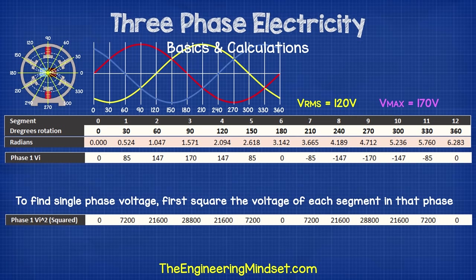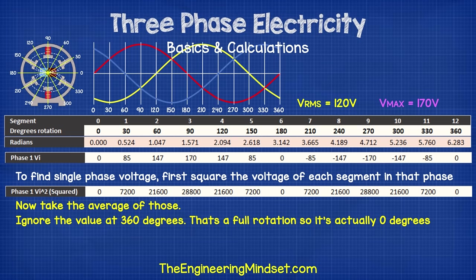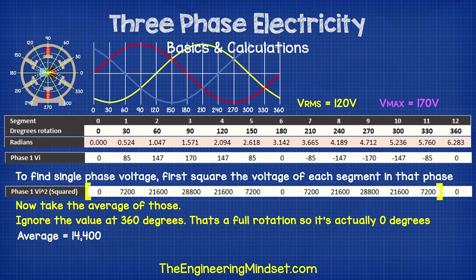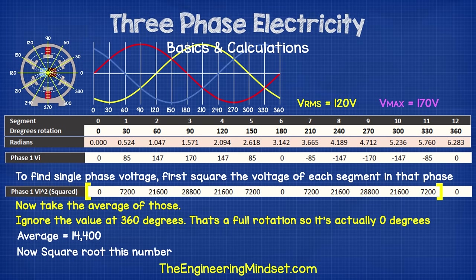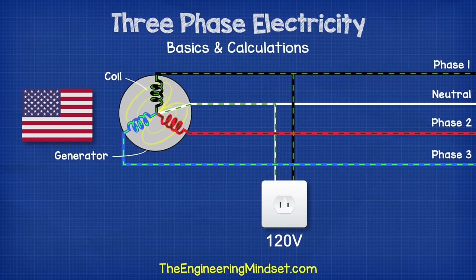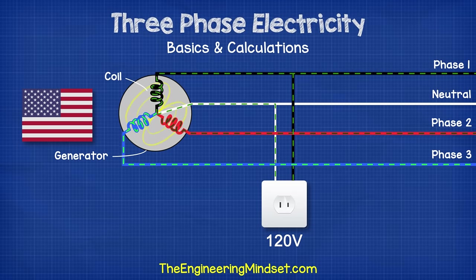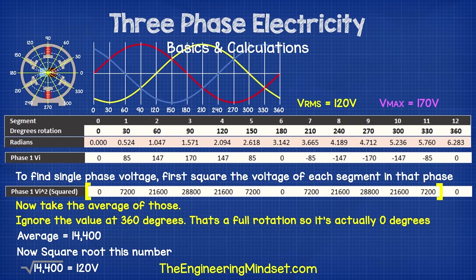We start by squaring each instantaneous voltage for a full rotation. Then take the average of these values — add them all together and divide by the number of segments, which is 12. Do not include the value at 360 degrees because this is a full rotation back to zero; including it would count zero twice and skew the calculation. Now take the square root of that number. This gives us our RMS voltage of 120 volts — the phase voltage. If we connect a device between any phase and the neutral line, we get 120 volts RMS. The same applies to phases two and three.